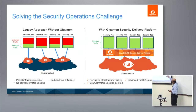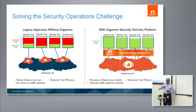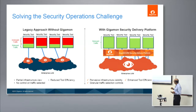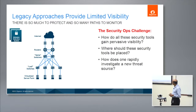When you combine the two, you get pervasive visibility into the infrastructure, much better tool efficiency because you can filter out what is irrelevant to the security tools and provide just relevant traffic, and number three, granular traffic selection controls. Those are the three key premises of the security delivery platform.